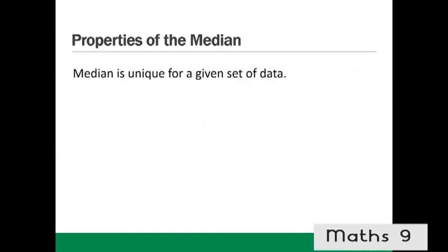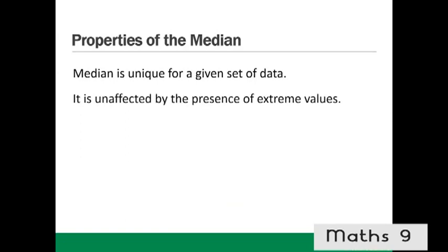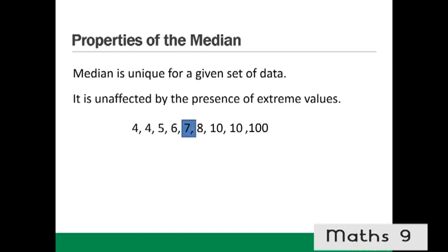Properties of the median. The median is unique for a given set of data and is unaffected by extreme values. For example, in a dataset the median is 6.5 (halfway between 6 and 7). If an extreme value of 100 is added, the median becomes 7 — it has changed slightly but is not greatly affected by the extreme value.